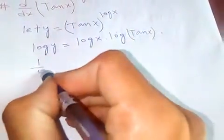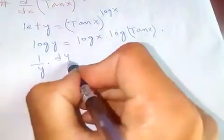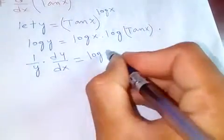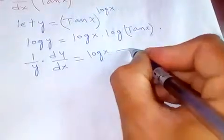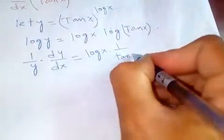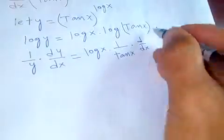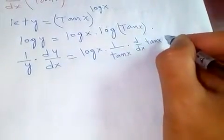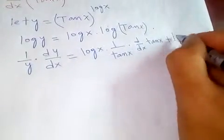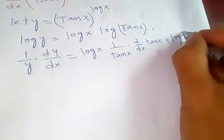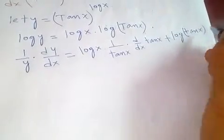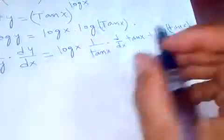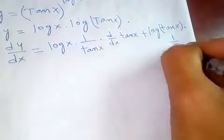Now I'm going to differentiate with respect to x. Differentiation with respect to x is 1 over y dy by dx equal to, using product rule, first function times derivative of second function plus second function into derivative of first function. When it's log x, derivative of log x is 1 over x.